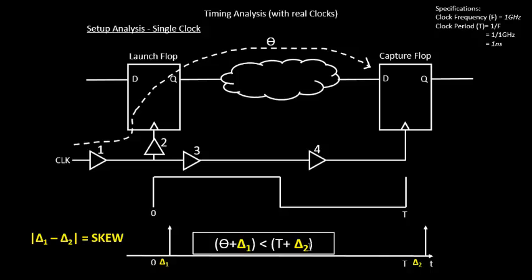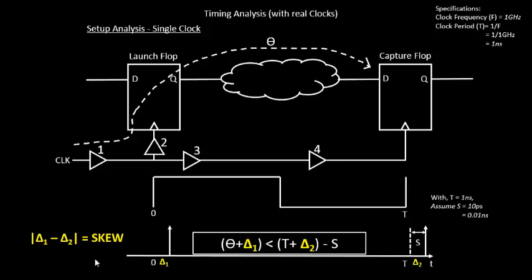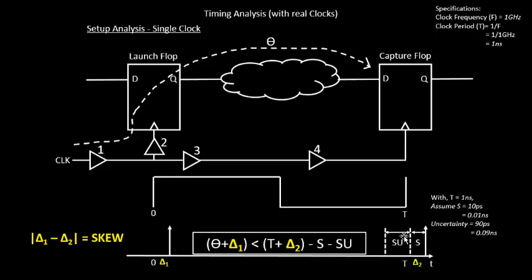You might want to look at the clock tree synthesis videos where delta1 minus delta2 is explained as clock skew. We also have the setup time S for the capture flop, which has to be subtracted. Initially setup time was subtracted from T, but now it will be subtracted from T plus delta2, because delta2 is the capture flop clock network delay. Additionally, the jitter — in the form of uncertainty — has to be subtracted from the complete equation. So this becomes your real, complete equation for setup timing analysis.